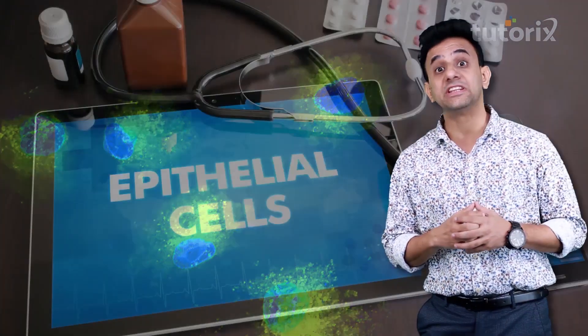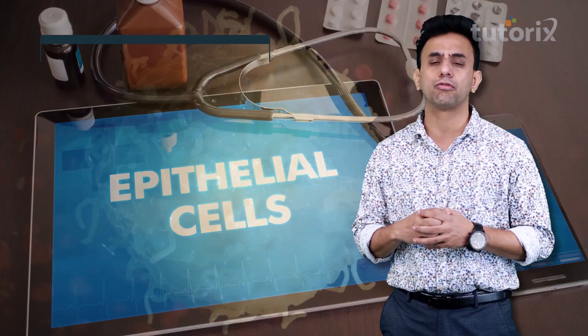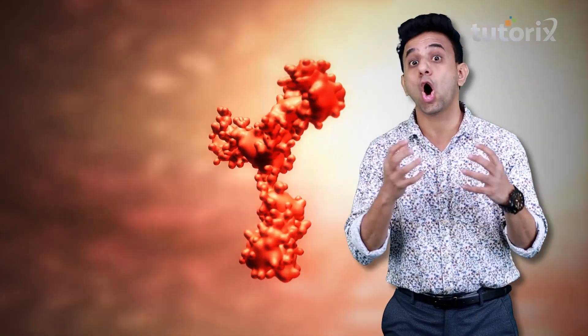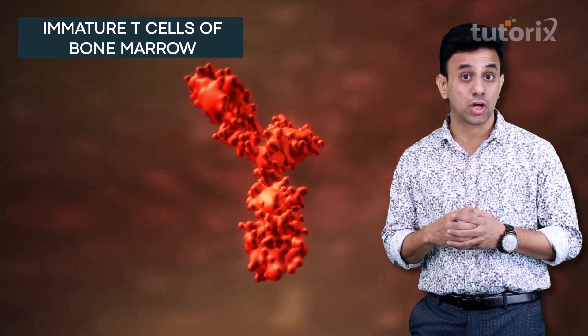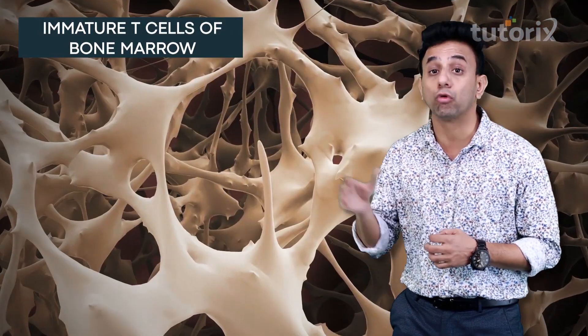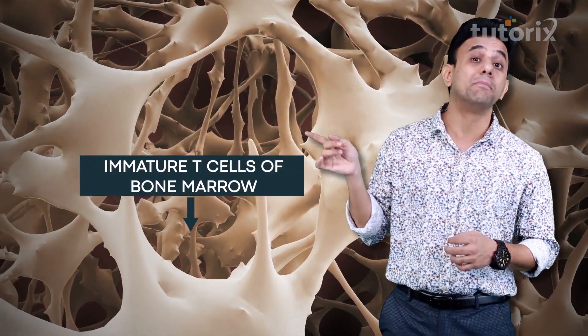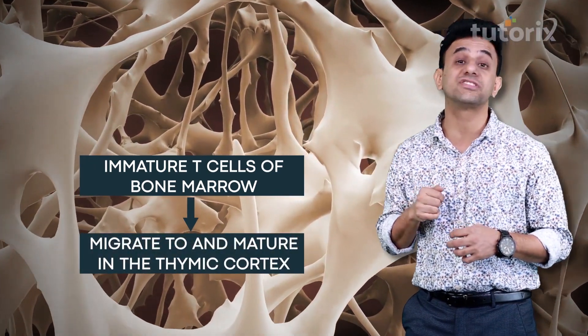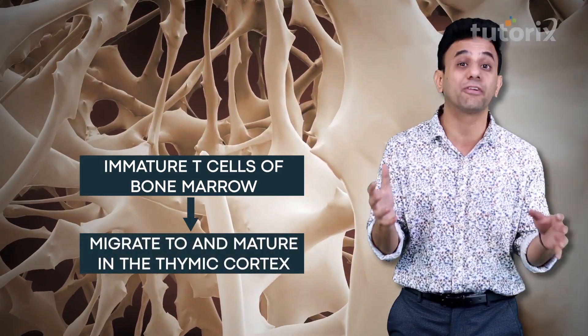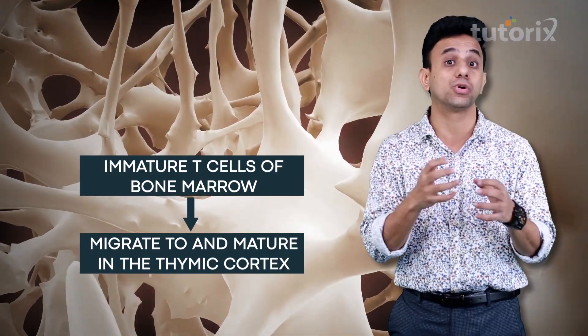The cortex of the thymus gland consists of many cells like T cells, as well as scattered dendritic cells, epithelial cells, and macrophages. The pre-T cells or immature T cells, which are found in the bone marrow, migrate from the bone marrow to the cortex of the thymus gland where they proliferate and further mature.